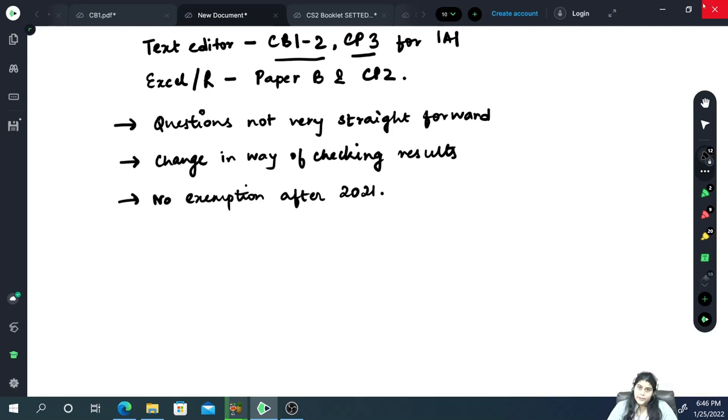Another thing is that from 2021 there is no exemption allowed from IFOA to IAI and IAI to IFOA. Up to 2021 the students who had cleared their papers they can take the exemption and we have a separate video for that as well where we have explained the entire technicalities and methods and constraints for taking exemption in either of the institutes.